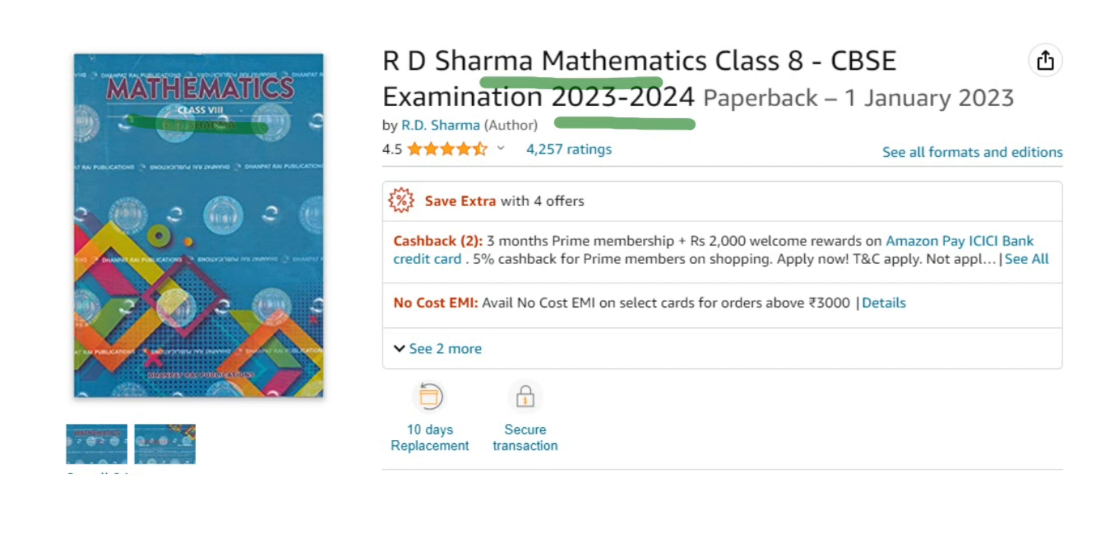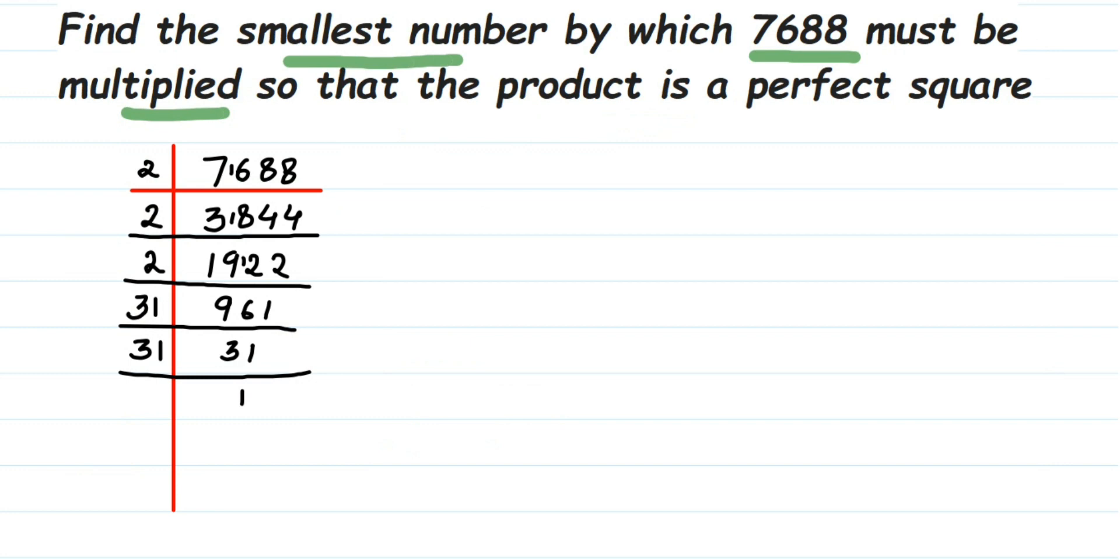Now let's come back to the question. Once we have done the division and found the prime factorization of this number, we're going to rewrite it. The factors are 2 × 2 × 2 × 31 × 31.